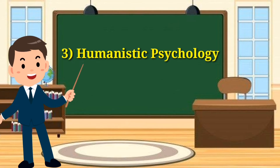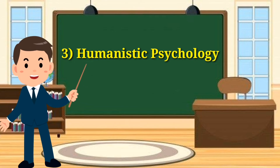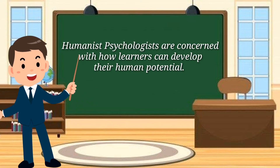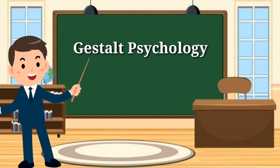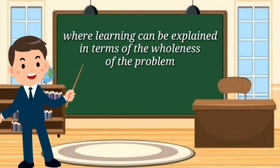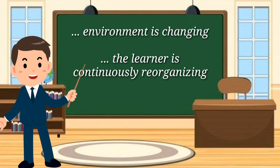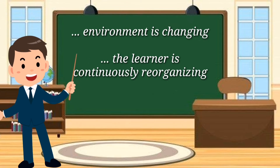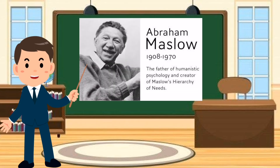Now let us come to the third theory related to the psychological foundations of education: humanistic psychology. Humanist psychologists are concerned with how learners can develop their human potential. It is built on gestalt psychology, where learning can be explained in terms of the wholeness of the problem and where the environment is changing and the learner is continuously reorganizing his or her perceptions.